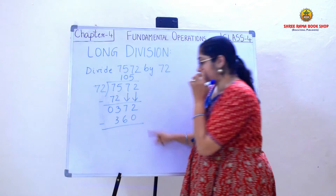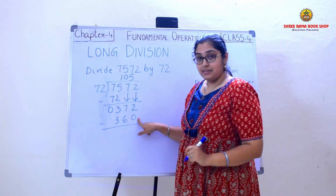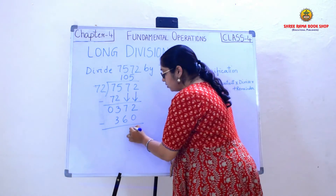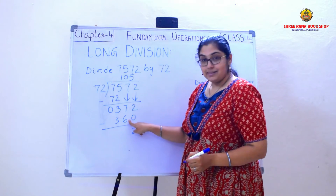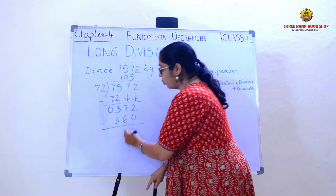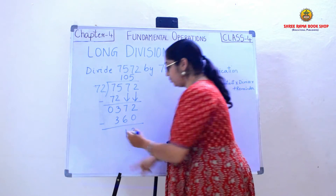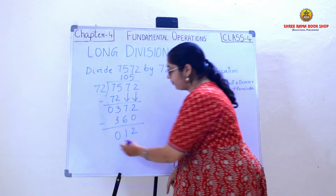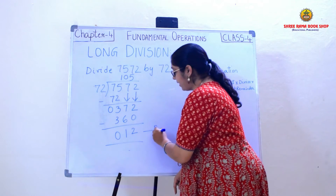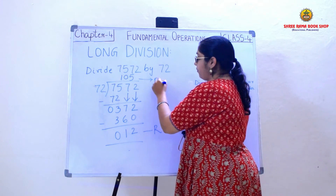Now I need to do the subtraction. 2 minus 0 is 2, 7 minus 6 is 1, and 3 minus 3 is 0. Now the remainder is 12 and the quotient is 105.